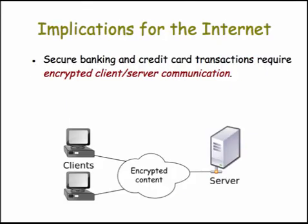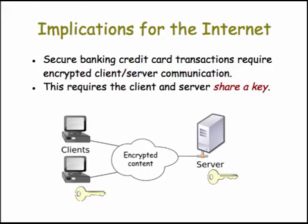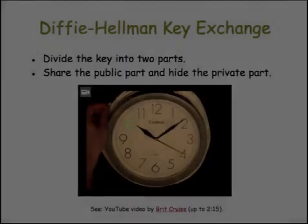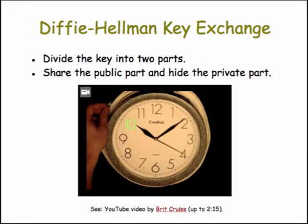The implications of this for the internet are enormous. You wouldn't be able to do banking and credit card transactions unless you were able to have encrypted communication between clients and servers. For this, they need to share an encryption key. The first solution that was used to solve the key exchange problem is known as the Diffie-Hellman key exchange algorithm.